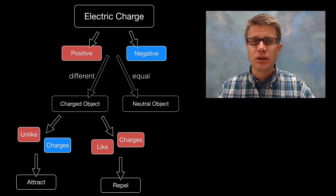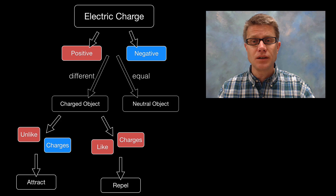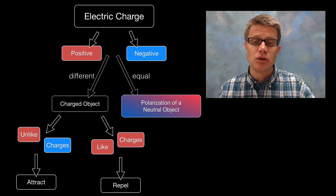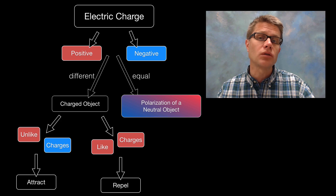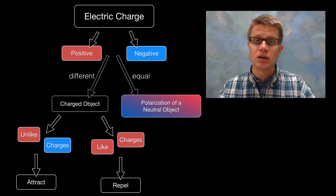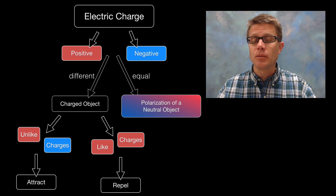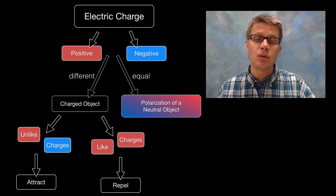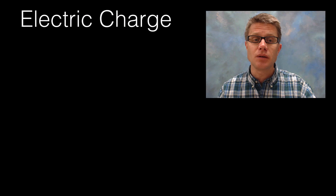Now why did the balloon stick to the wall if the wall didn't have a charge? Well, if you move a charge up to a neutral object, what it can do is polarize that object. It can move some of the charges to one end, and what it does is create a somewhat charged object.